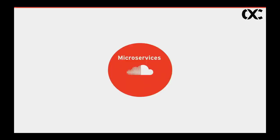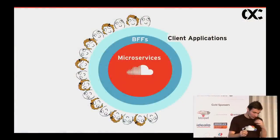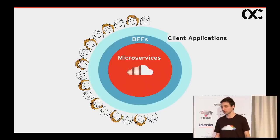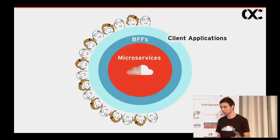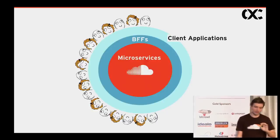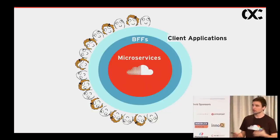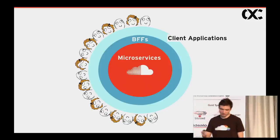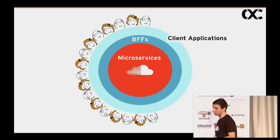If we put our microservices at the heart of the universe, the next thing that comes is our BFF applications. They are the border between the outside world — our client applications — and our microservices. Every request that ends up in our microservices land has to go through one of our BFF applications. Because those BFFs sit on the perimeter, we expect them to execute a certain set of operations for each incoming request.